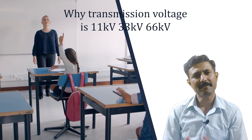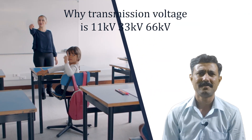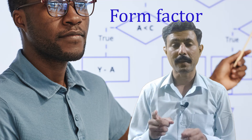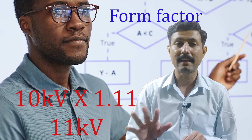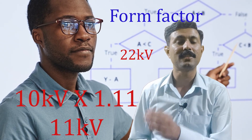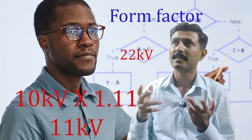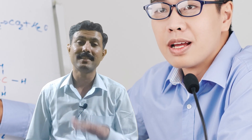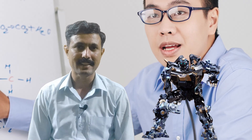When I was in my college days, my faculty asked me the same question. A confident student stood up and started telling that the form factor of a sine wave is 1.11, and when we multiply it with 10 kV it gives us 11 kV. But then my faculty made me realize that this is not the right answer. And in today's video, I'll tell you why it is not the right answer.